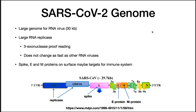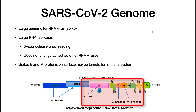If it didn't have that proofreading capability, you'd never make a successful copy of the virus. This also means that this RNA virus does not mutate as rapidly as other RNA viruses. The spike, E, and M proteins may also serve as targets for the immune response.